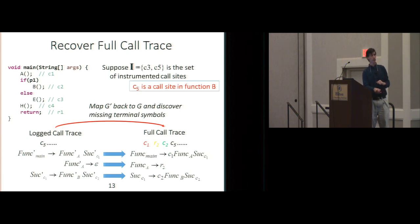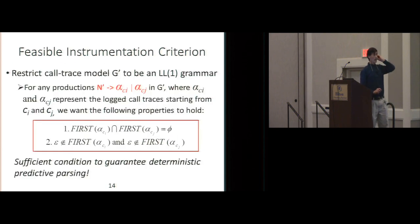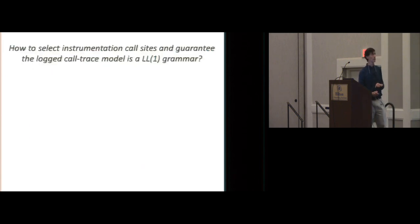Okay, so now, we come to the problem of we want to restrict the call trace model G prime to be an LL1 grammar. And we just have to have a sufficient condition for that, okay? So, so we, what we want is, every time we have alternatives for a non-terminal, we want the intersections of the first sets to be empty. That's the same as usual. And here, we just want to arrange it so that they never have epsilon, that no right-hand sides are nullable. Okay? So that's just a simple way of addressing that. It's a sufficient condition so that we get our deterministic predictive parser.